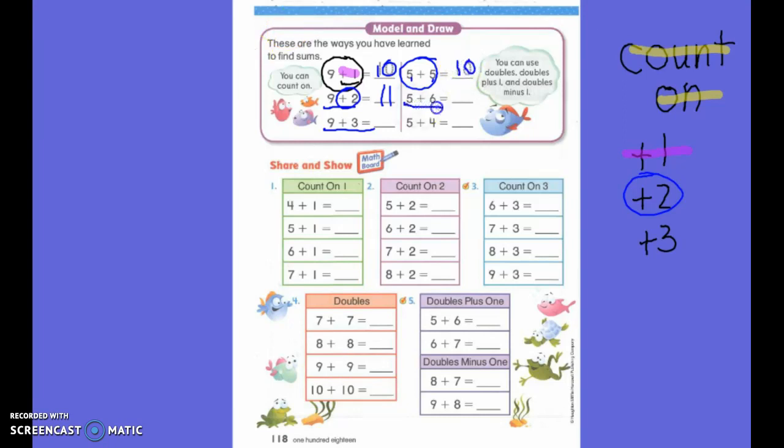What kind of math fact is this? It's a double plus 1. Because isn't this one just a little bit bigger than this one? Yes. They are double plus 1. So it is a double plus 1. So we double the 5. That's the first one we do. Then we add one more. Then that's our sum.